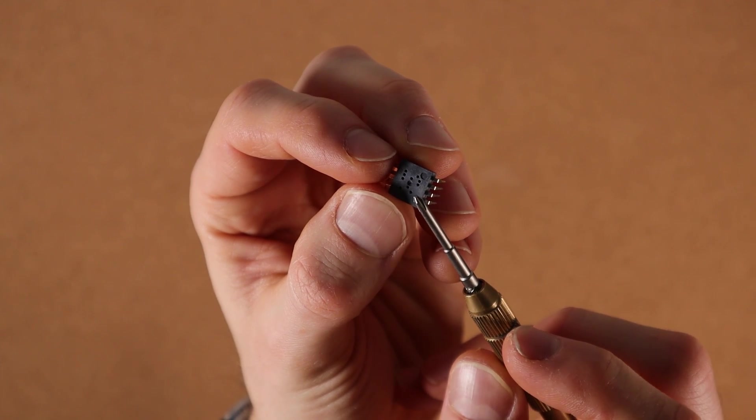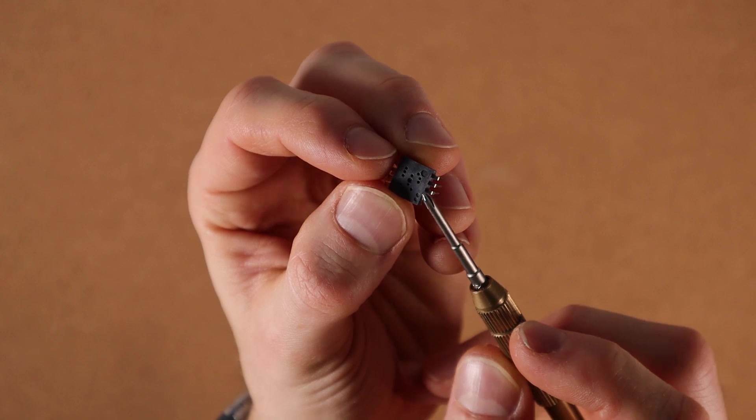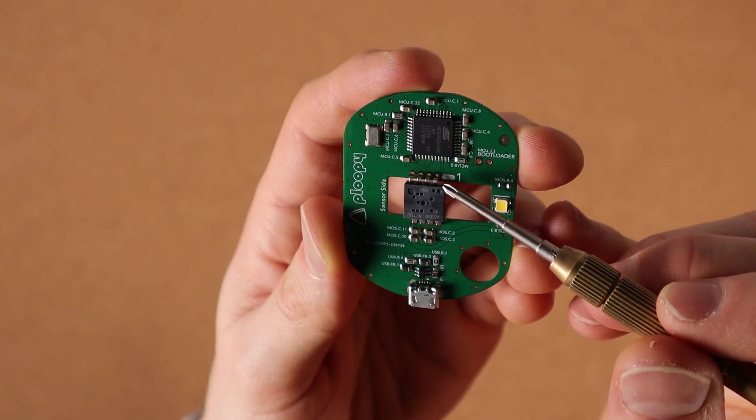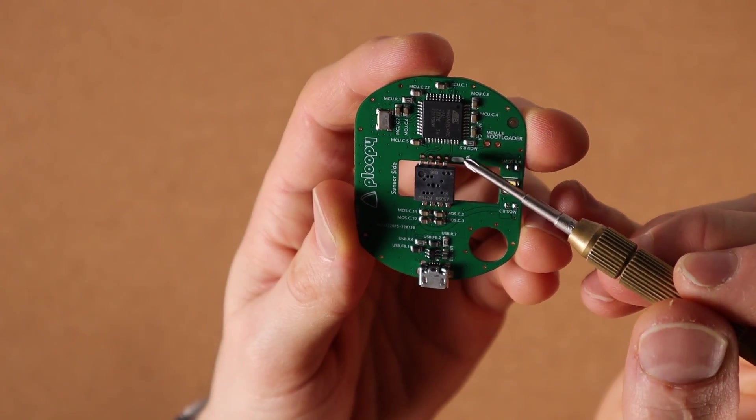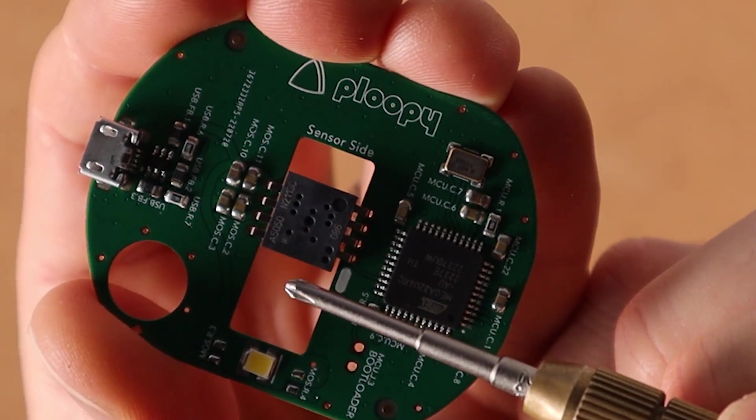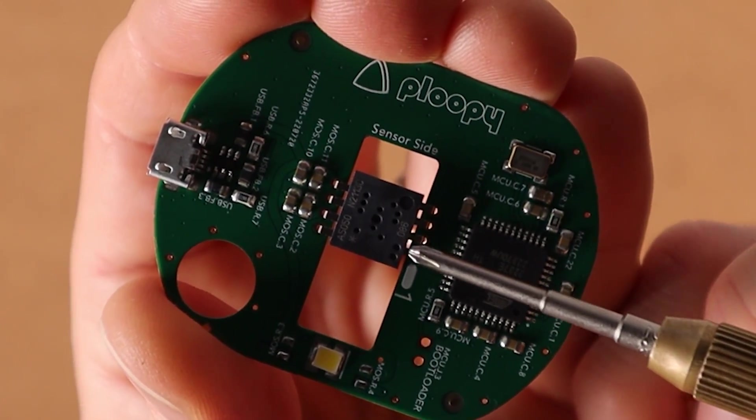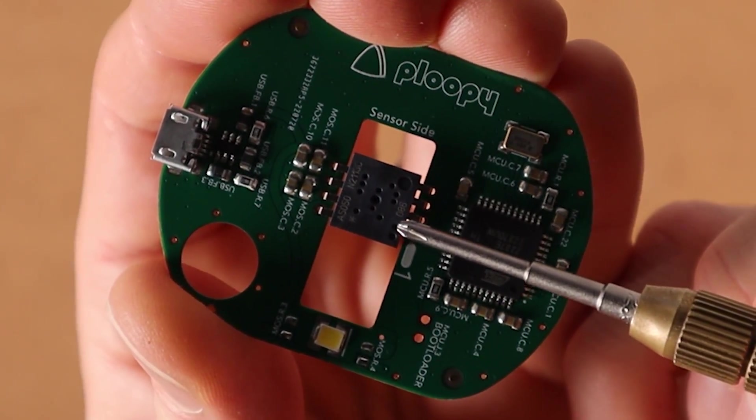So right here, you see there's two little dots. Those line up with the number 1 on the PCB. Here you can see the two dots right next to the number 1. Just as a reference point, it also says A5050 right there on the opposite side of the two dots.